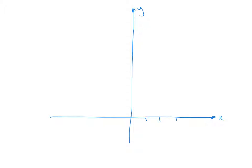1, 2, 3, negative 1, negative 2, negative 3. Now, what happens if we went on the y-axis? 1, 2, 3, 4, 5, 6, 7. So, going up 1, 2, 3, 4, 5, 6, 7.